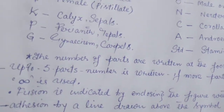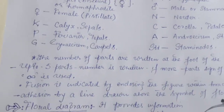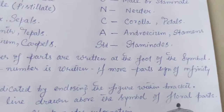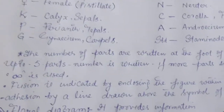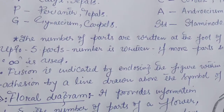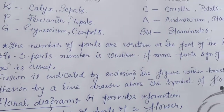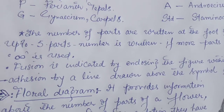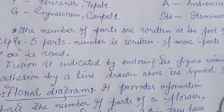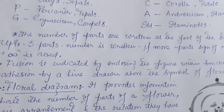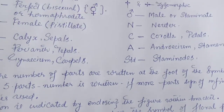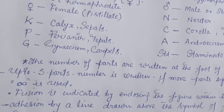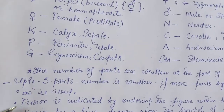The number of parts are written at the foot of the symbol. In the floral formula, we write the number of the parts at the foot of the symbol. If the number of parts is up to 5, the number is written. If it is more than 5, the sign of infinity is used.